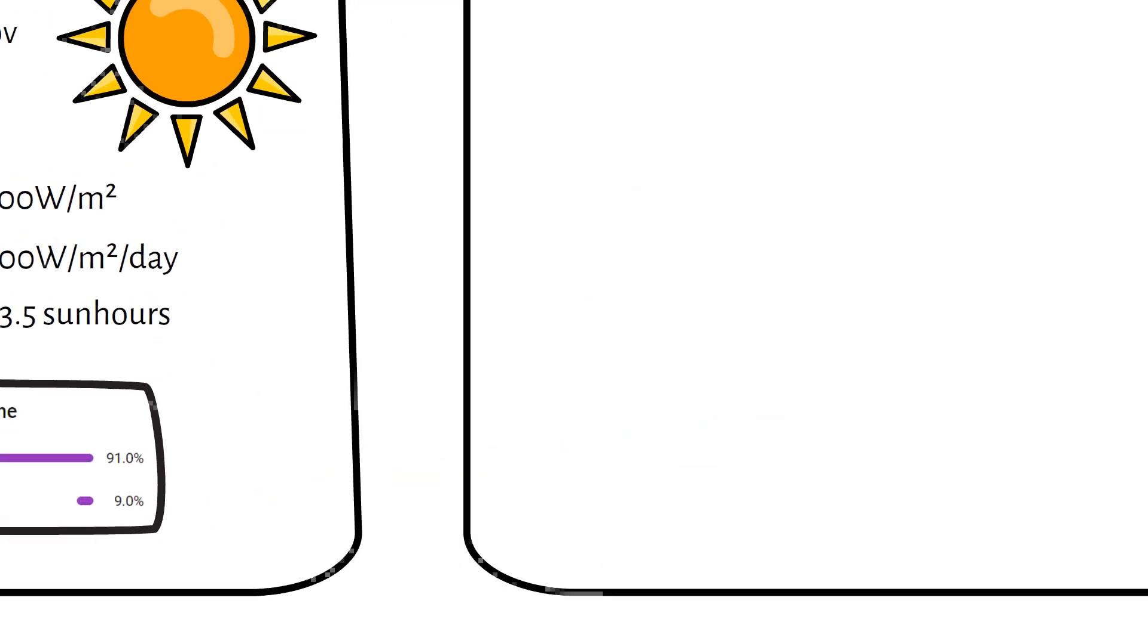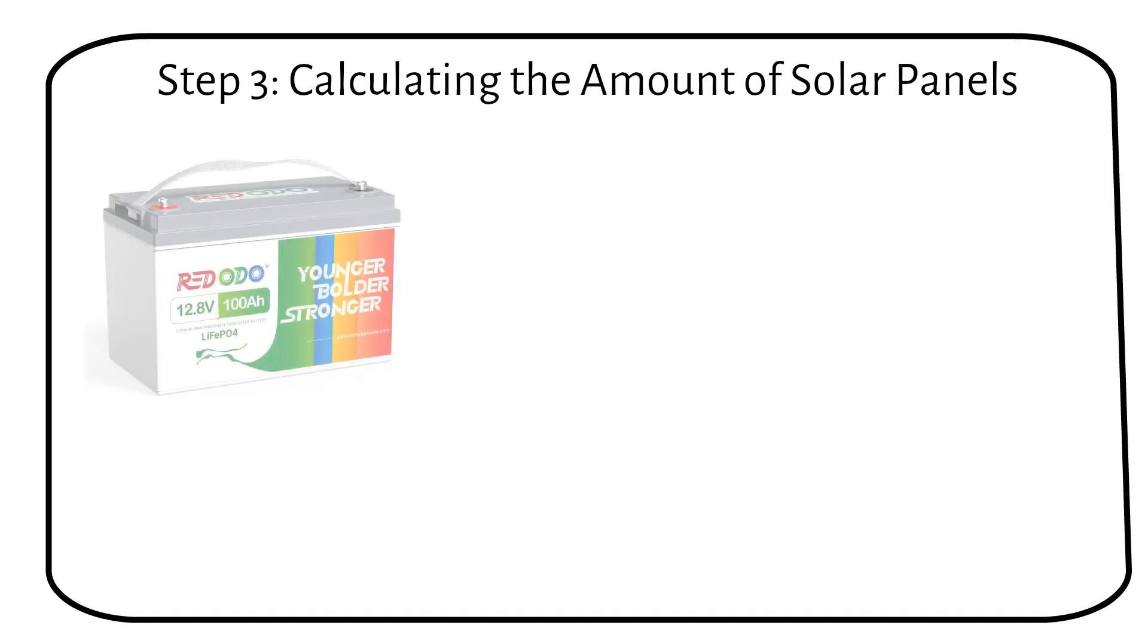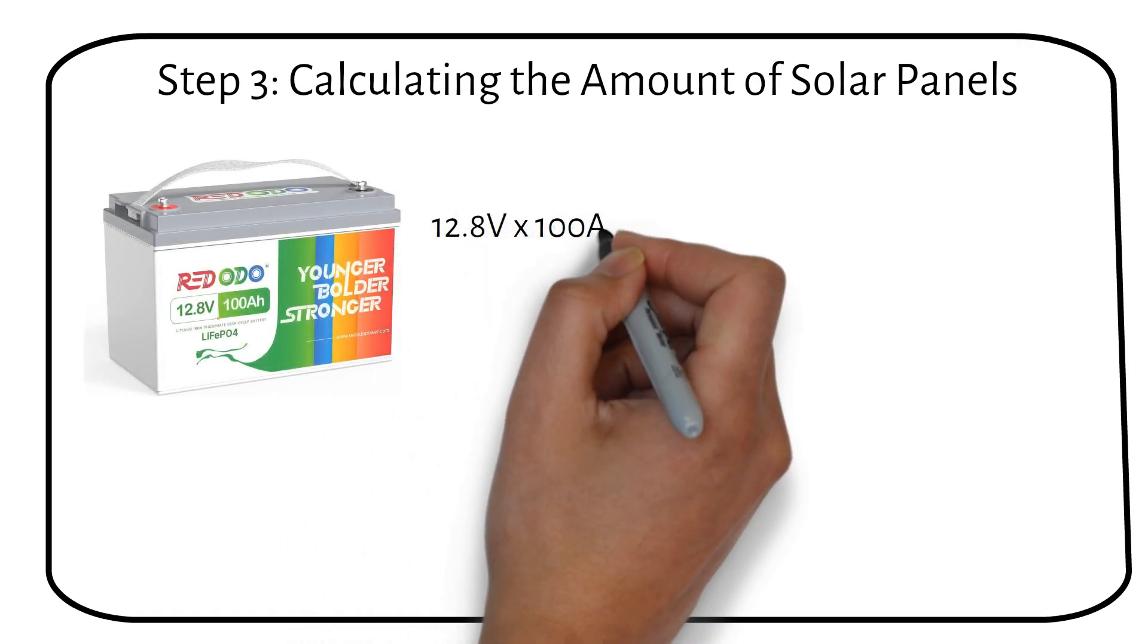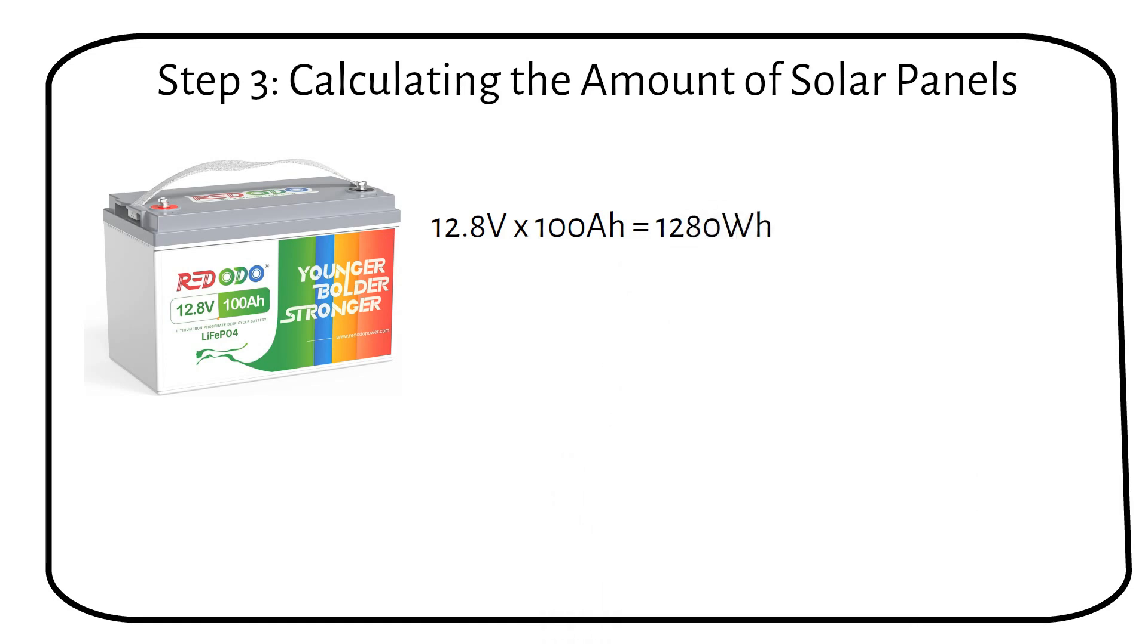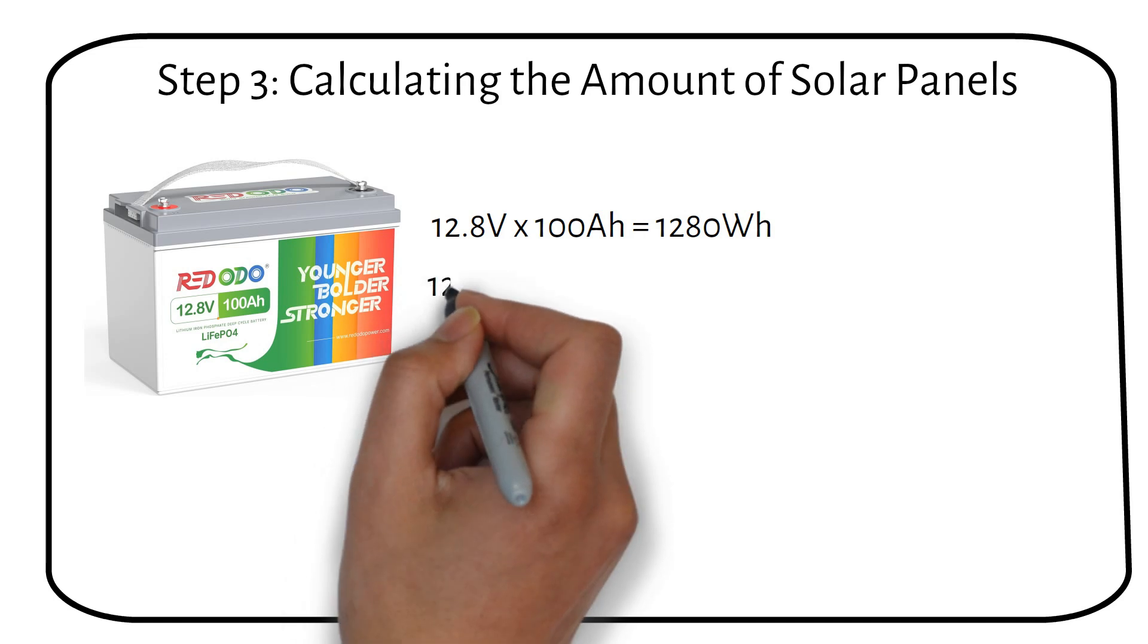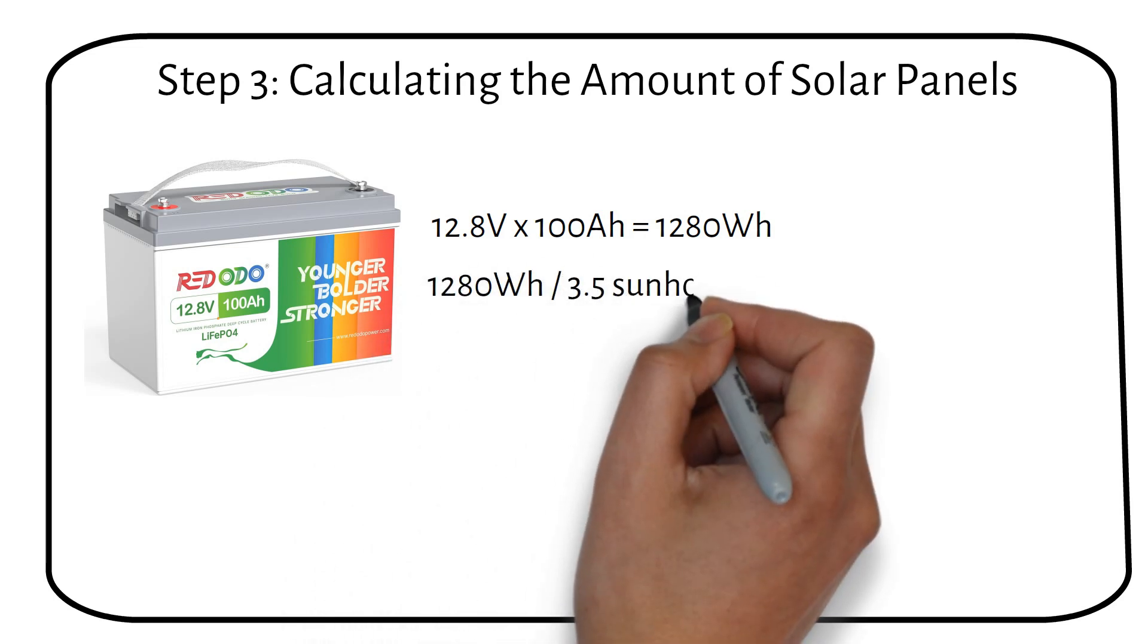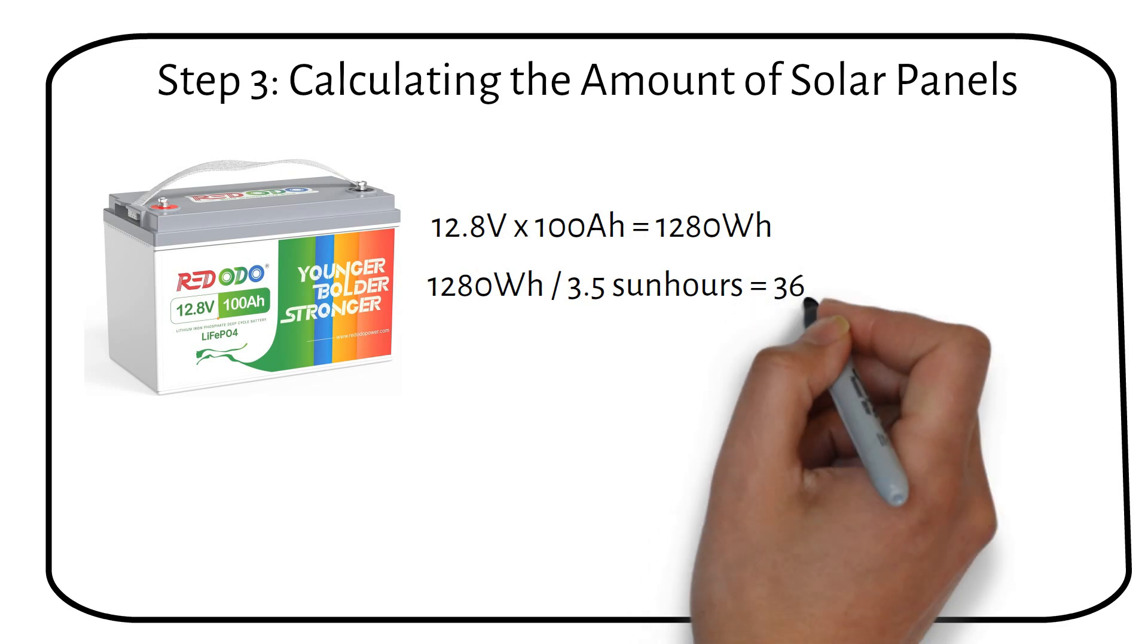Now, let's put everything together. From step 1, we know that a 12V 100Ah battery has a total capacity of 1280 watt-hours. Off-grid system design suggests we should recharge the battery in one day. With 3.5 sun hours per day, the formula becomes 1280 watt-hours divided by 3.5 sun hours equals 365 watts.